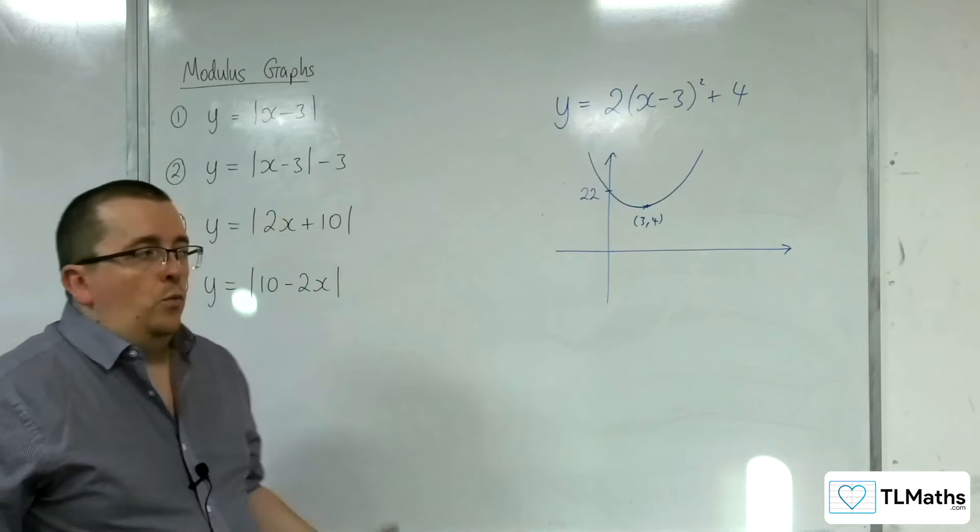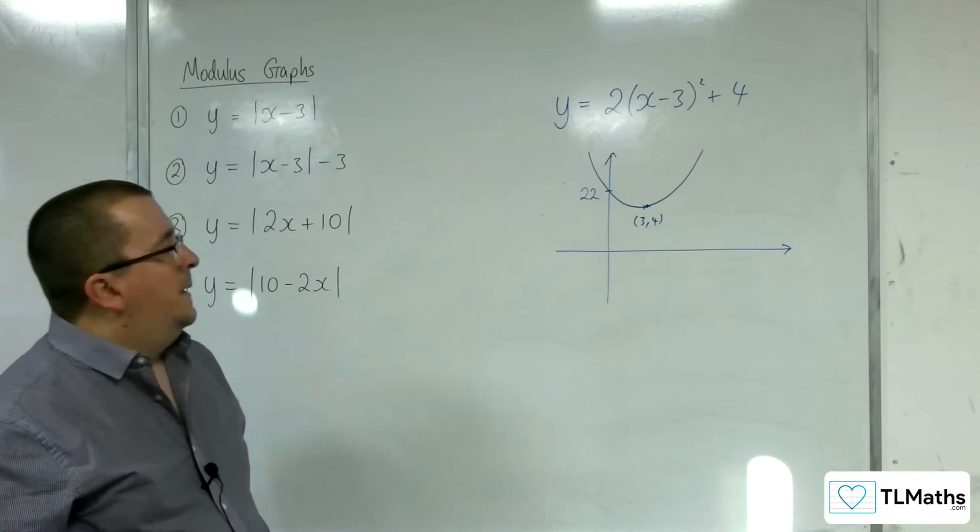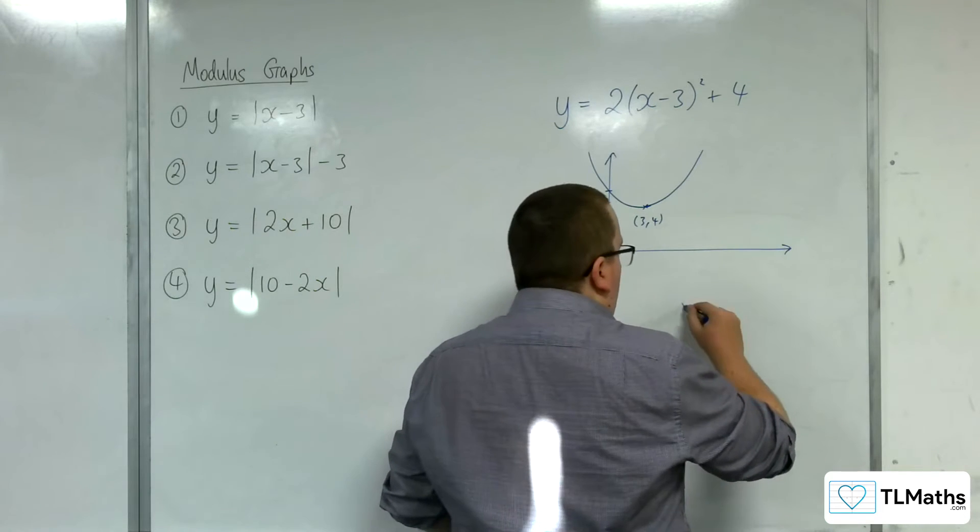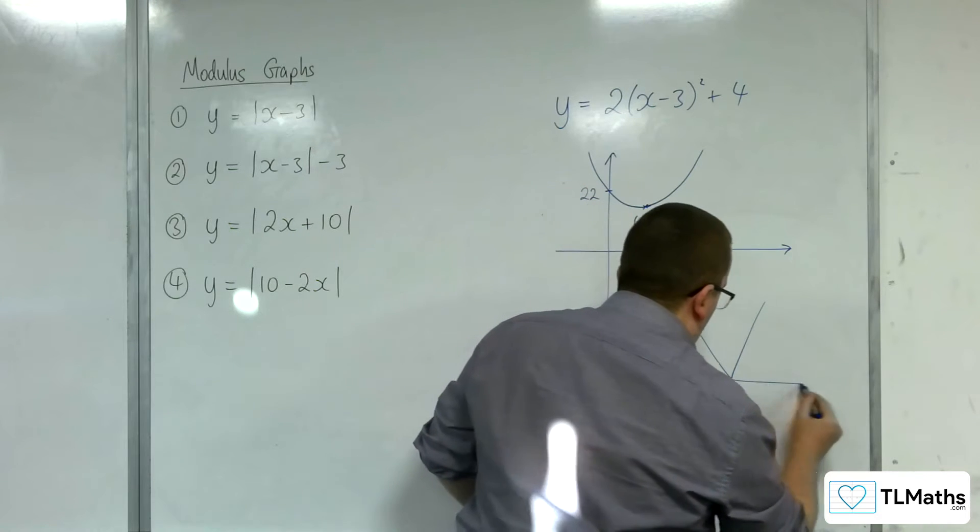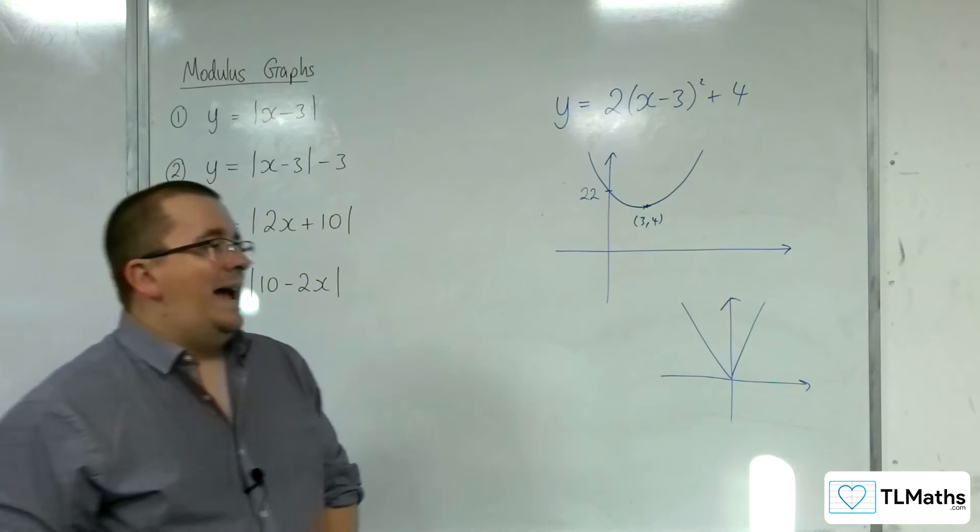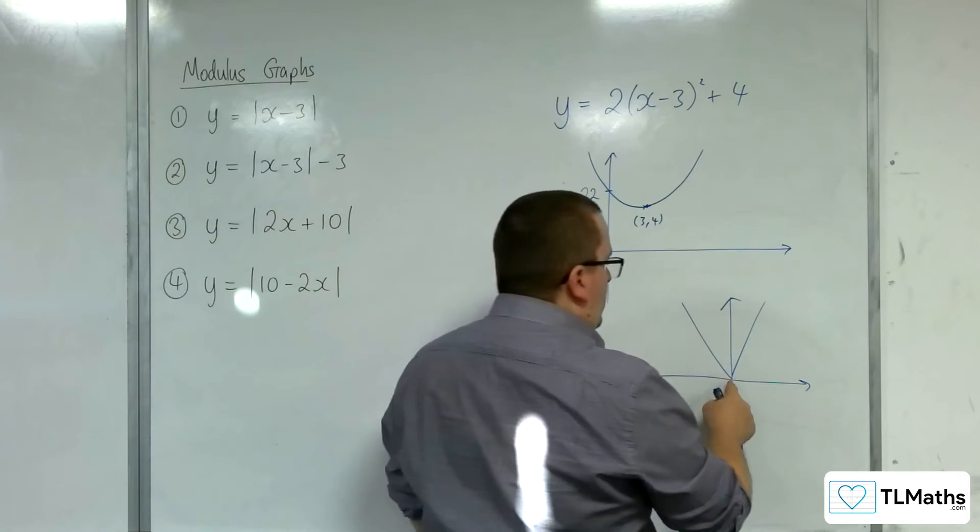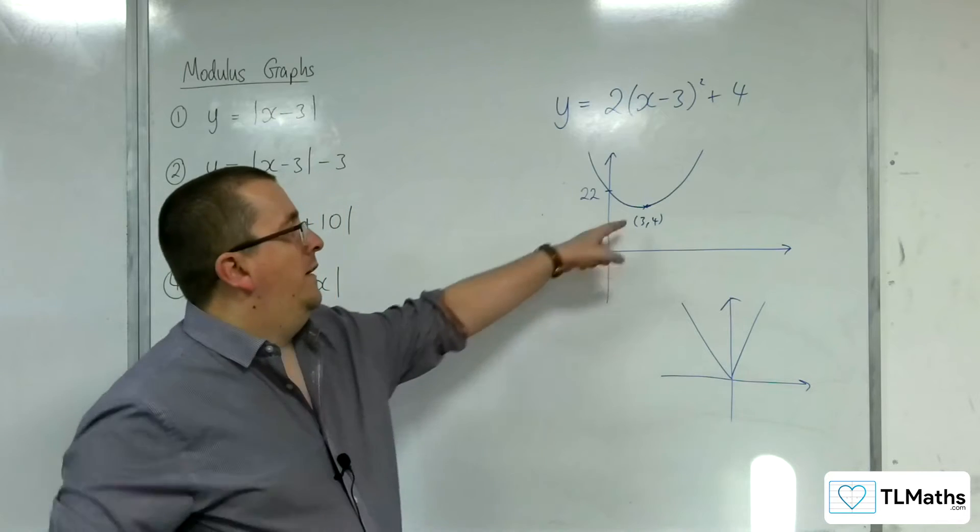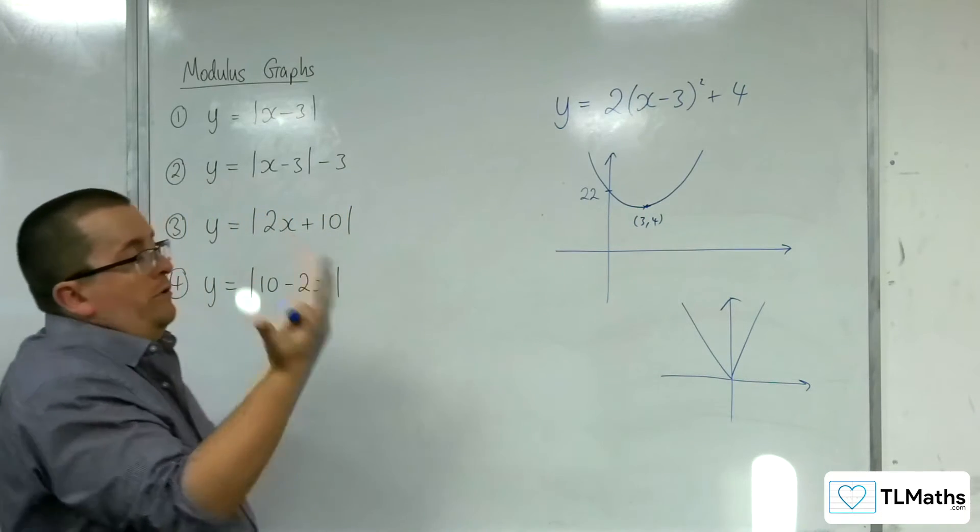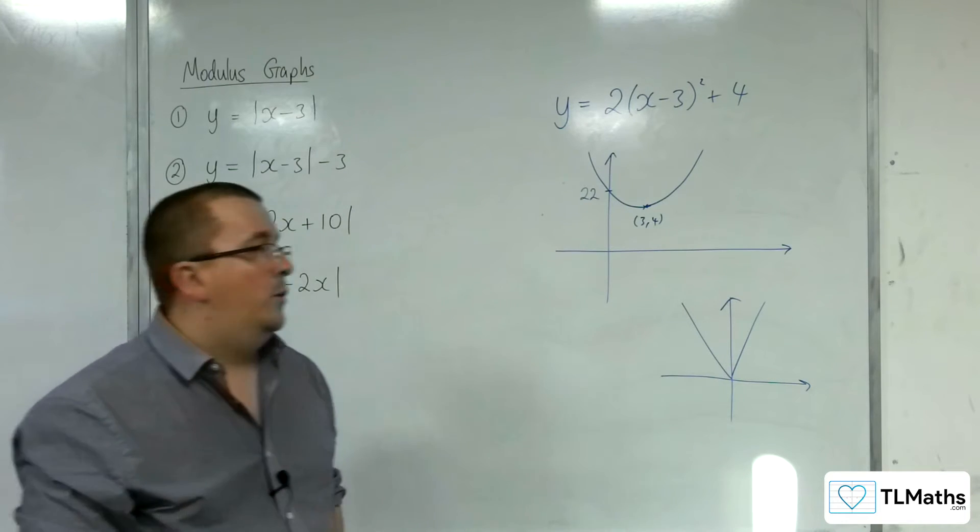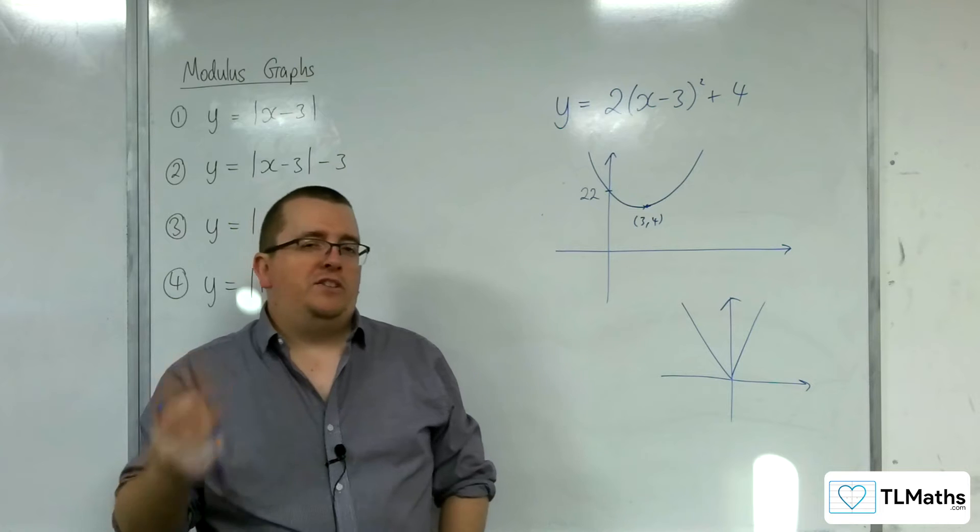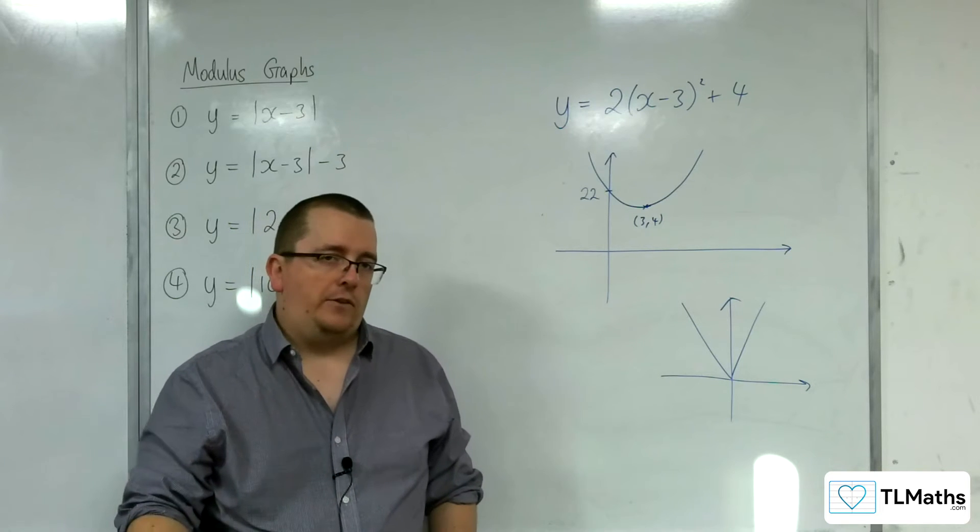Now, how does that link in with modulus graphs? Well, modulus graphs, y equals |x| has this distinctive V shape, and it has a vertex, just like the parabola does. Although the parabola has what we would refer to as a turning point or a stationary point, and this point isn't a turning point or a stationary point, we could still identify it as a vertex.